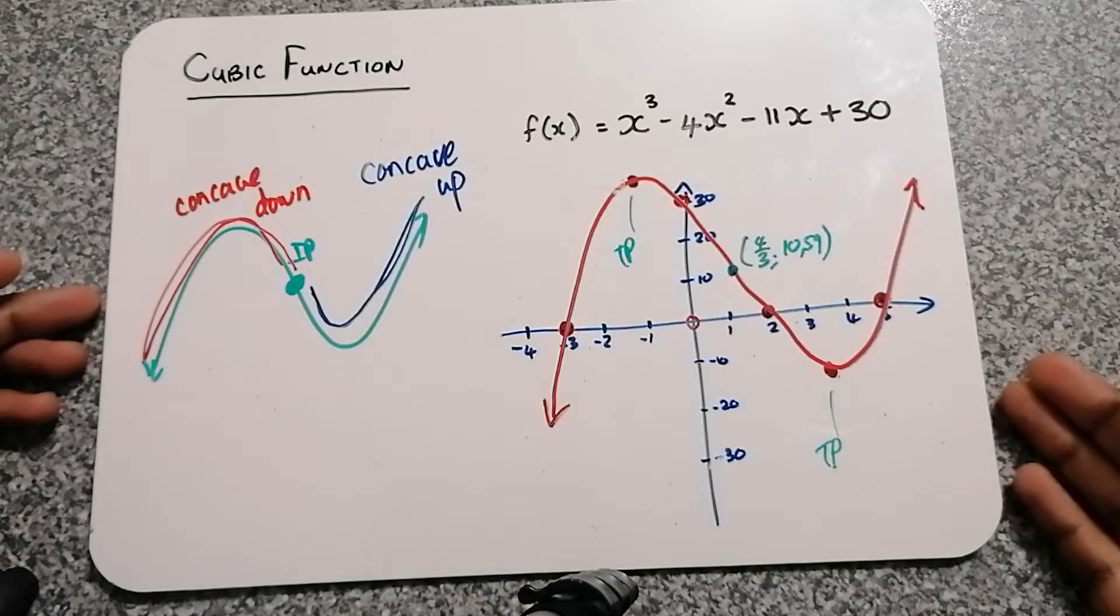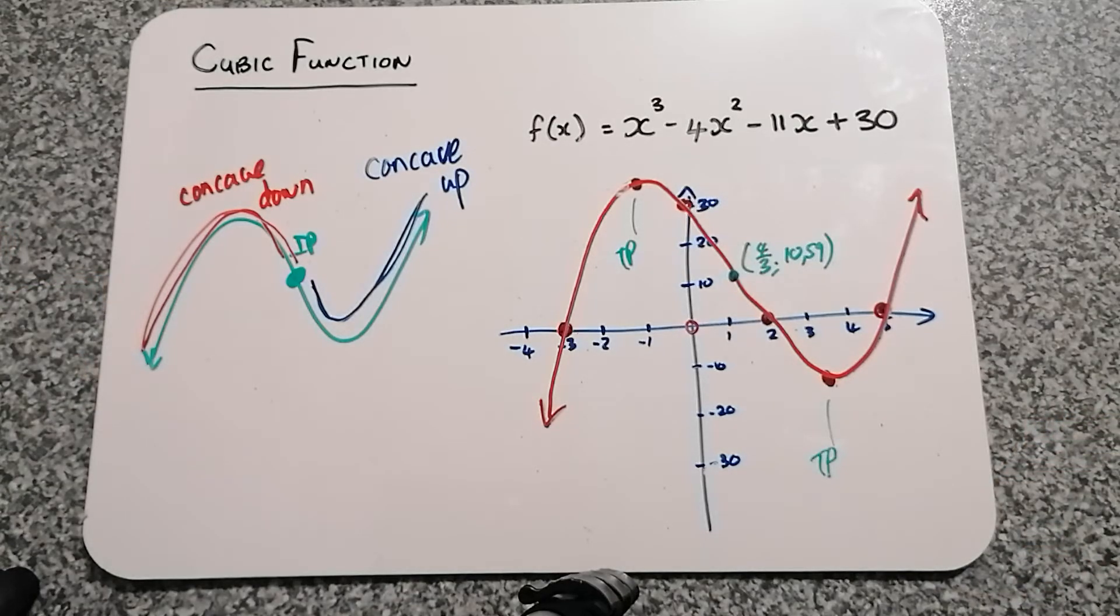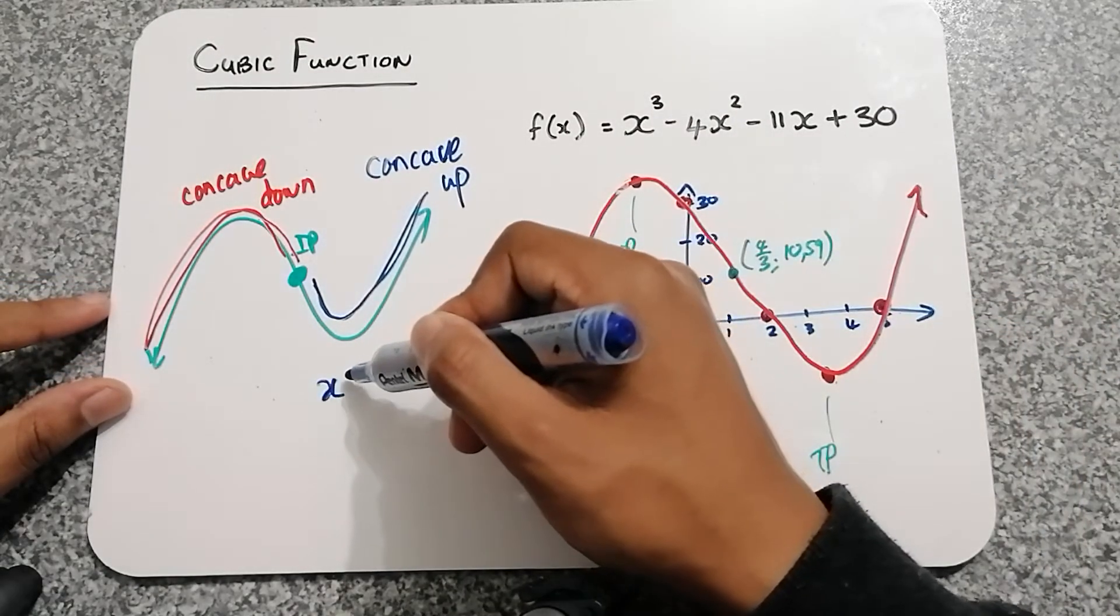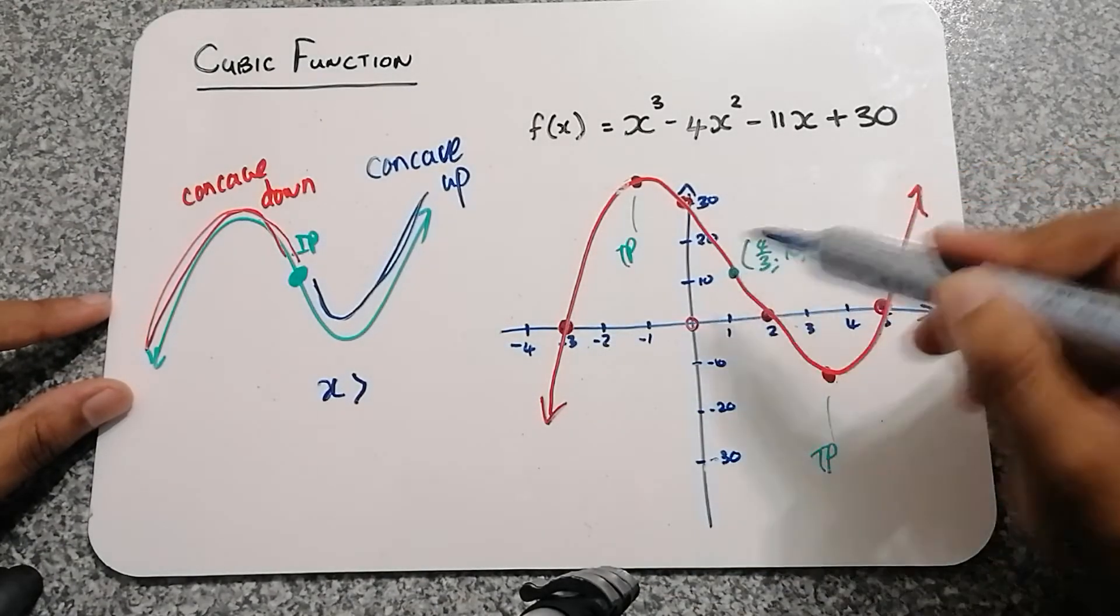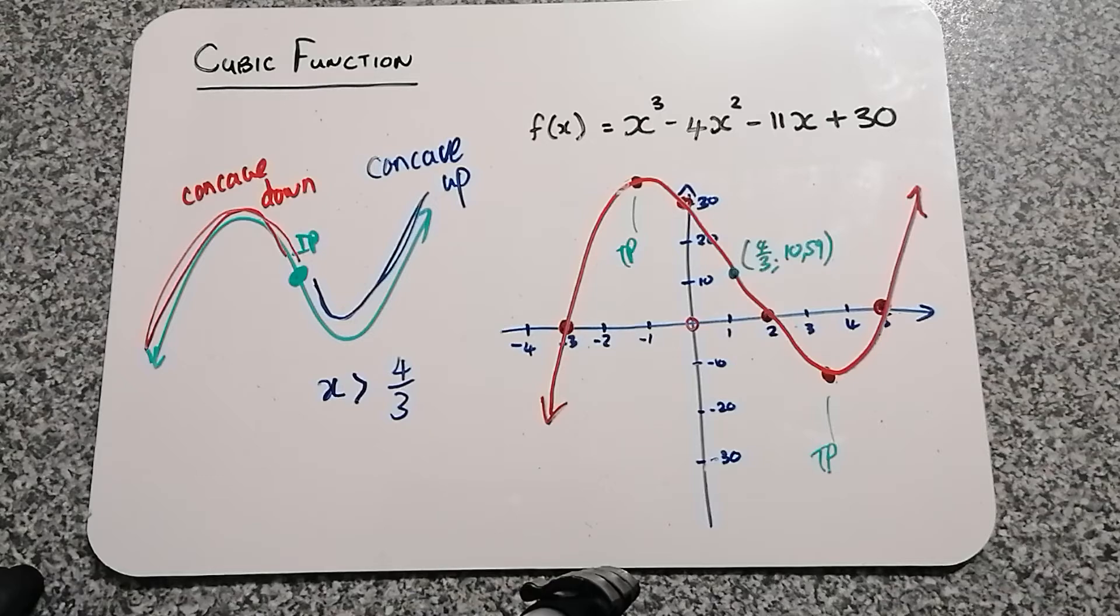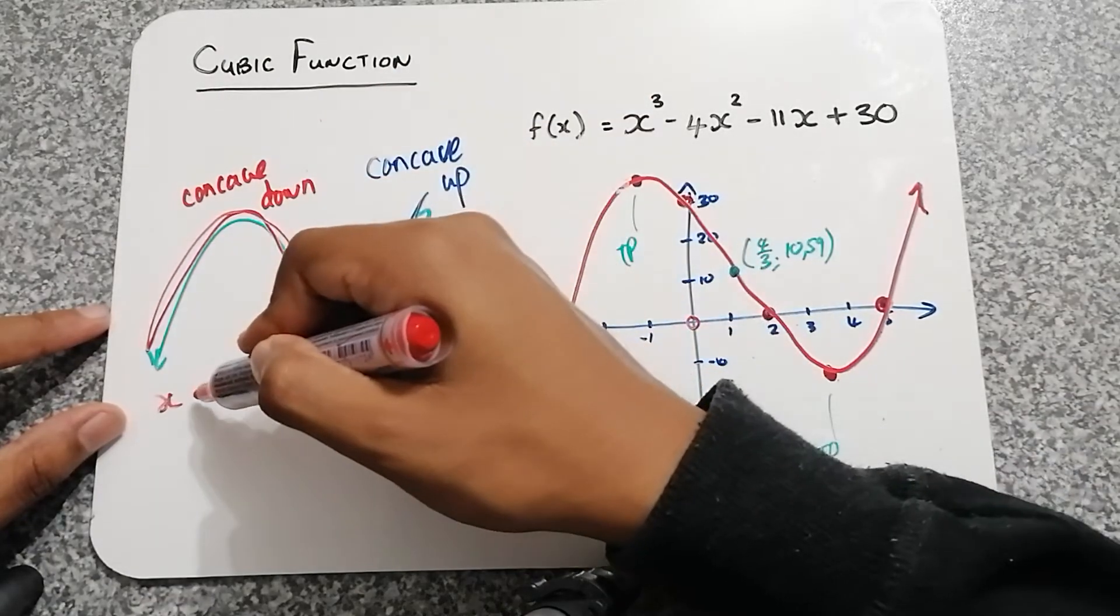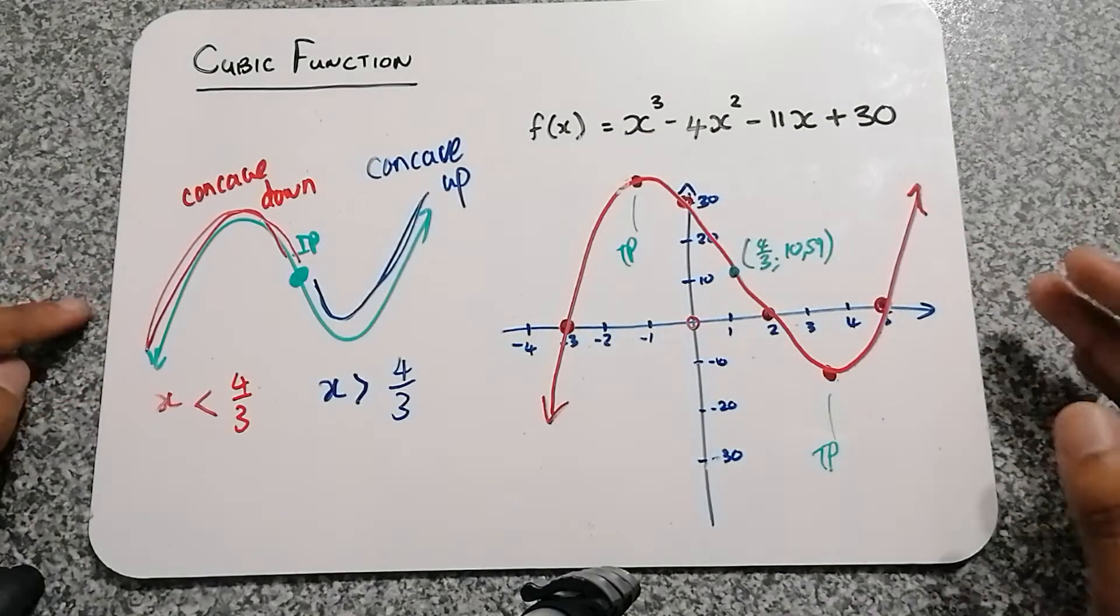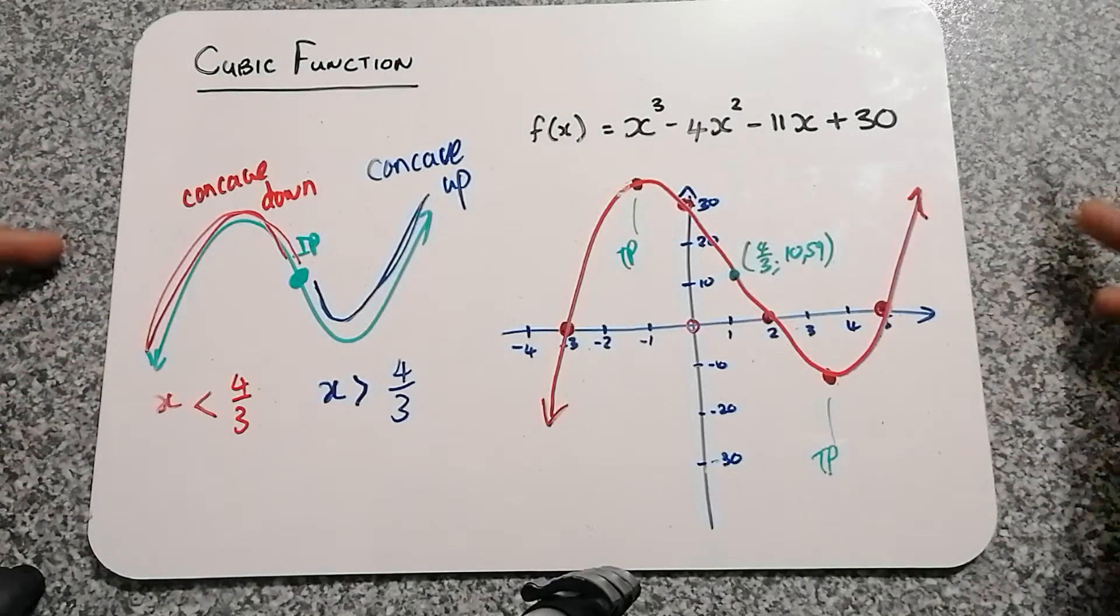And we have this inflection point dividing the graph into these two sections. So let's say they were to pose a question to you: for which values of x is this graph concave upwards? You would mention these x values. So you could say it's all the x values that is greater than the inflection point, or at least the x value at the inflection point, which in this case is the four over three. And if they reverse the question: for which values of x is the graph concave down? You would reference these x values, so all the x values less than the inflection point.